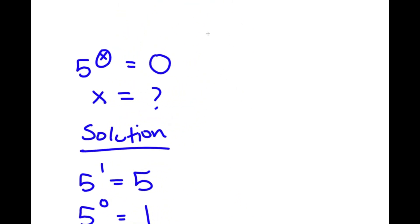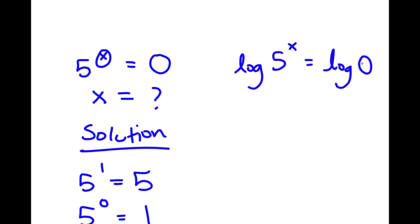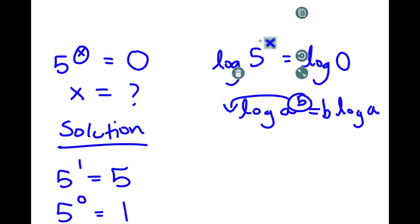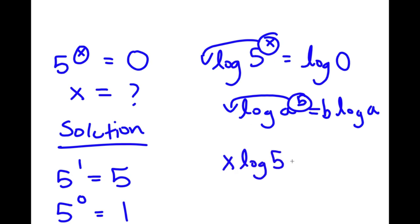The first step is to take the log on both sides. So I have log of 5 to the power of x equals log of zero. Now, if I have something in the form log a to the power of b, I can move the exponent b to the front — so this equals b times log a. In this case I have log 5 to the power of x, so I move x to the front, giving me x times log 5 equals log zero.